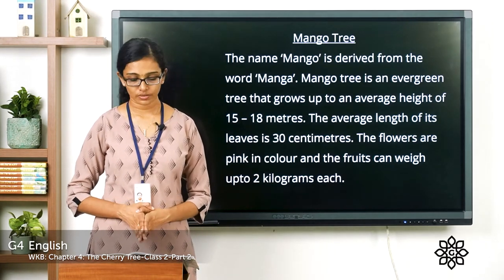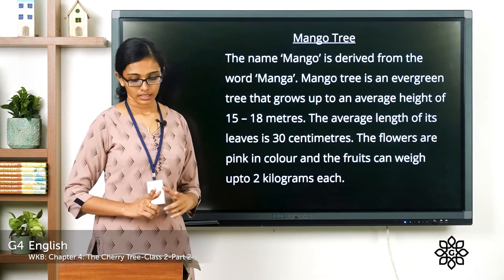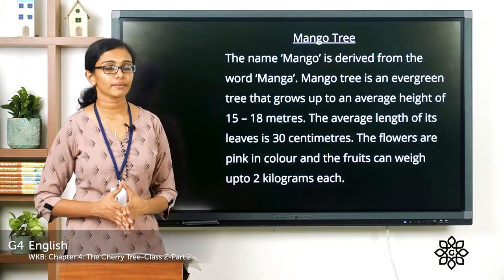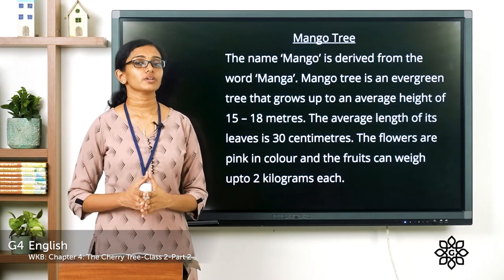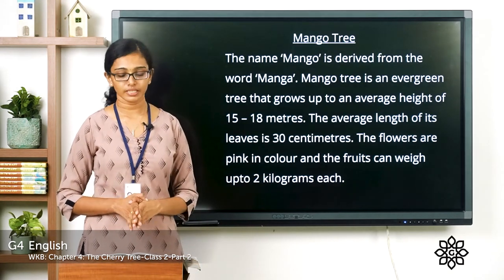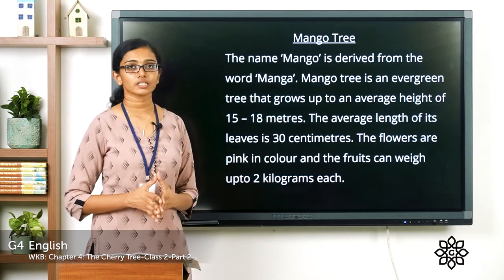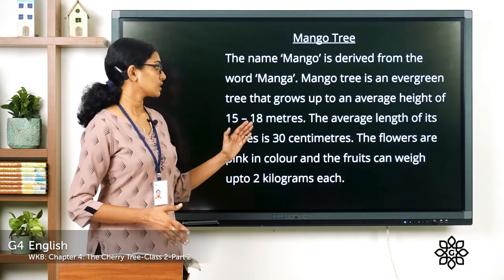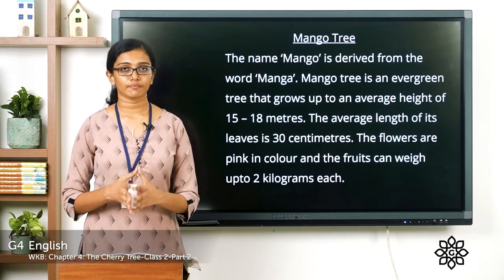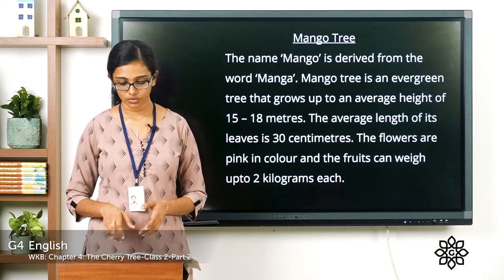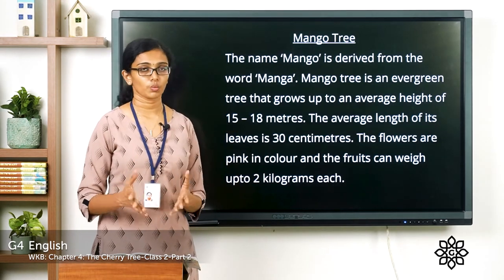Hope you listened carefully. Now let's look at the answers. The name of the tree is mango tree. It is an evergreen tree. The mango tree grows up to an average height of 15 to 18 meters. The average length of its leaves is 30 centimeters. The flowers are pink in color. The fruits can weigh up to 2 kilograms each. The name mango is derived from the word 'manga.'